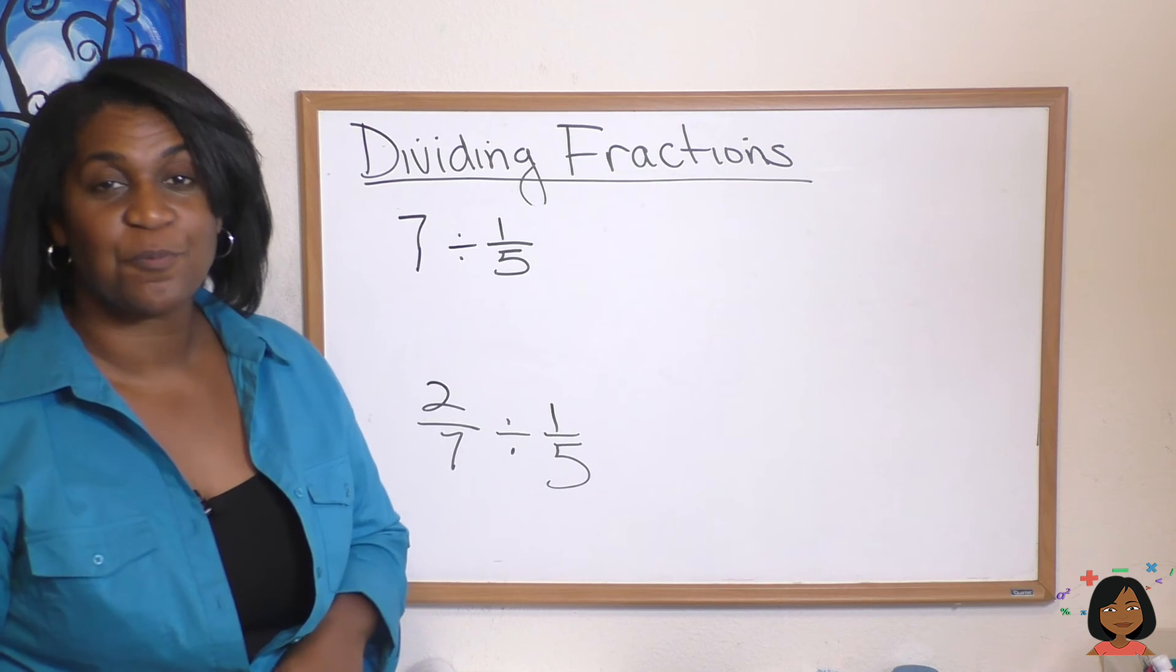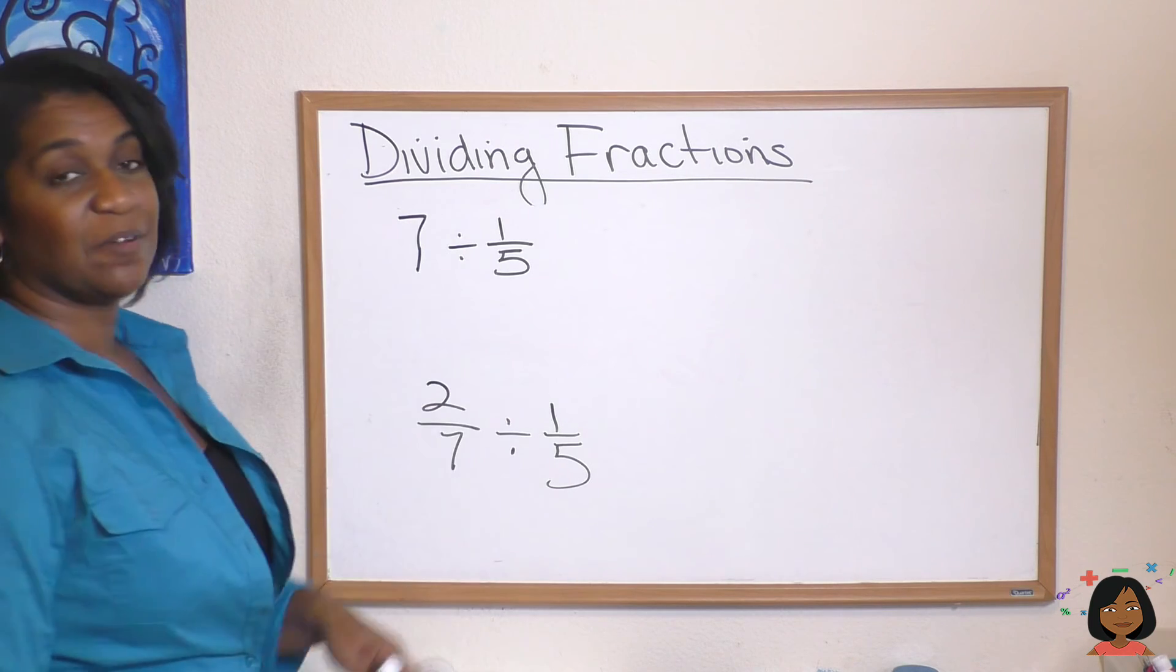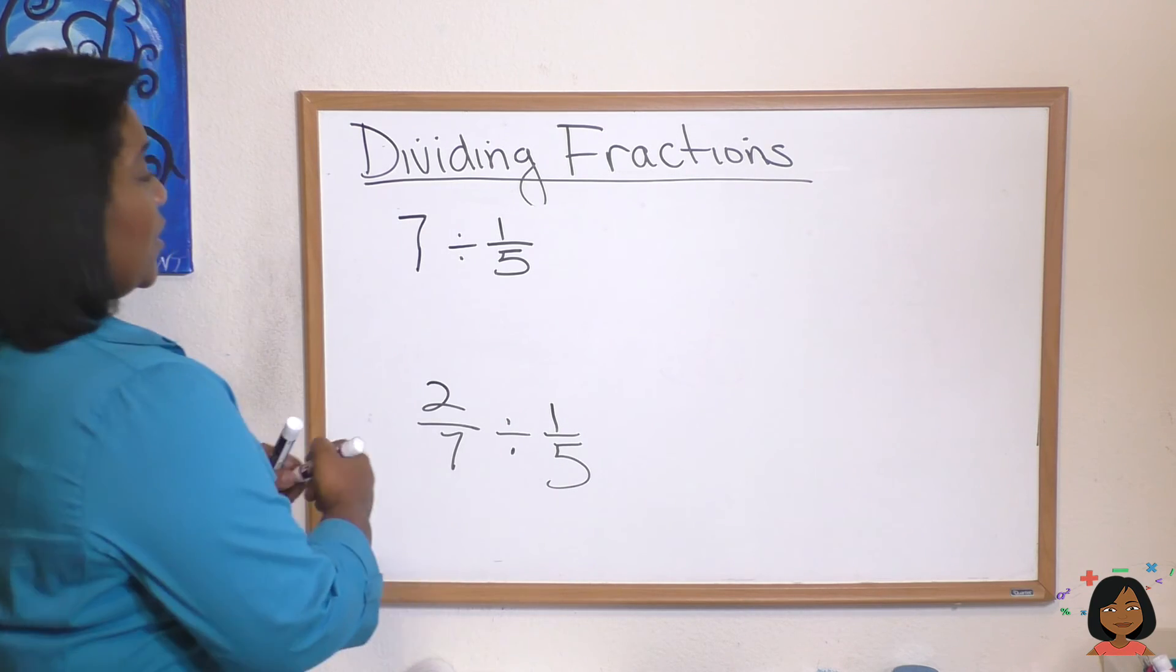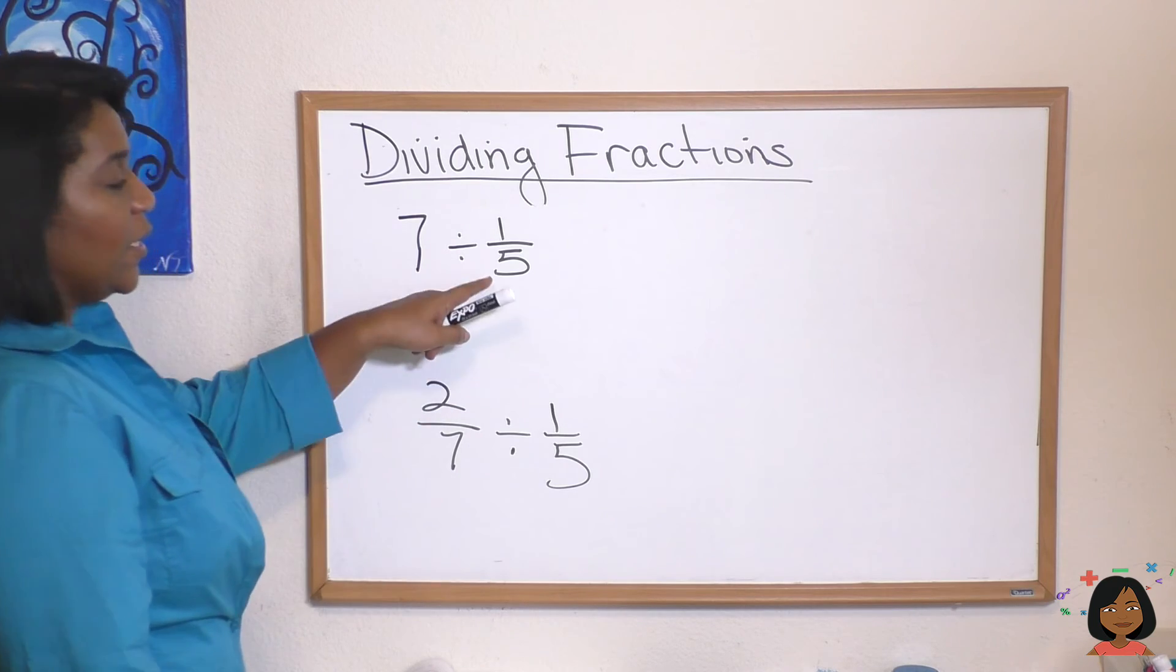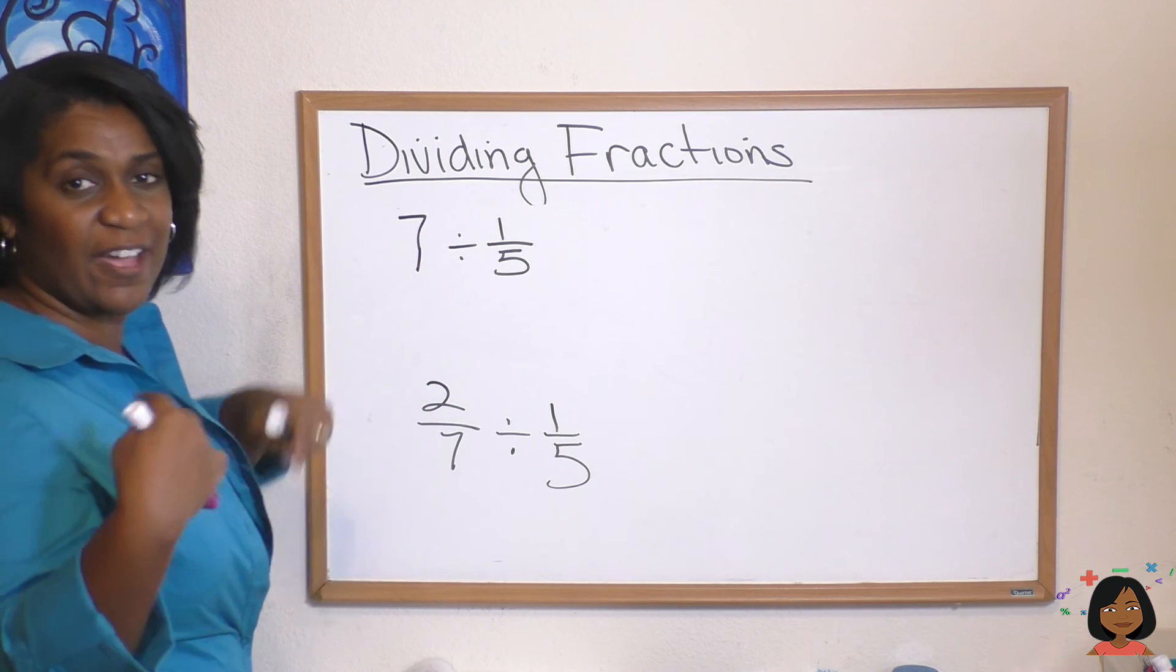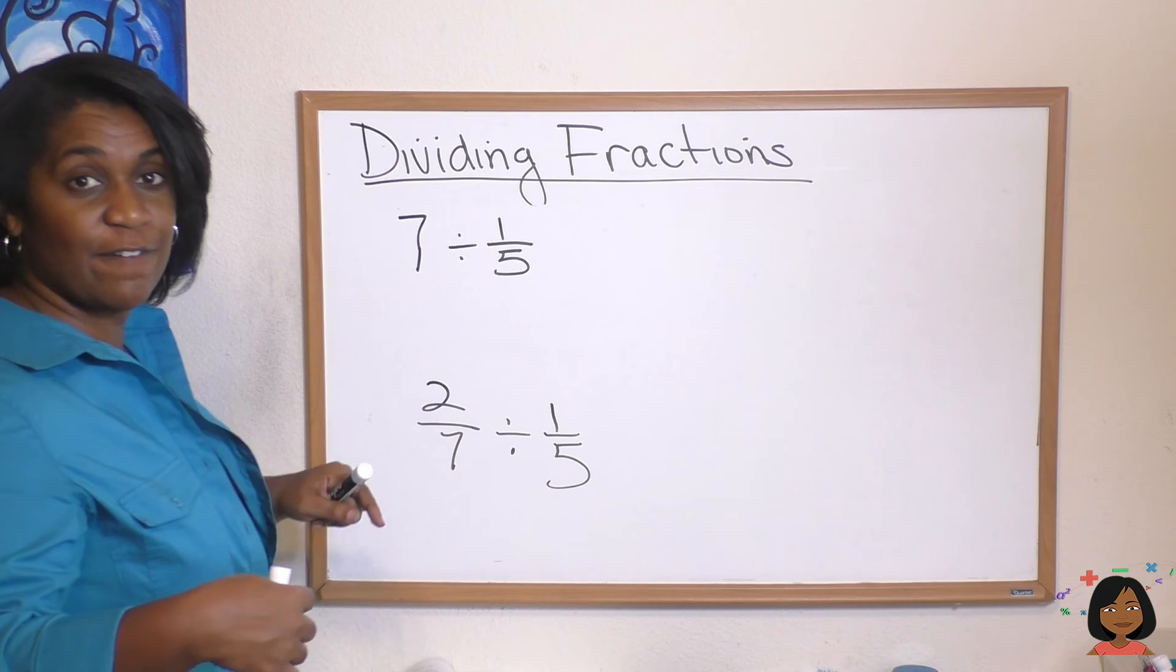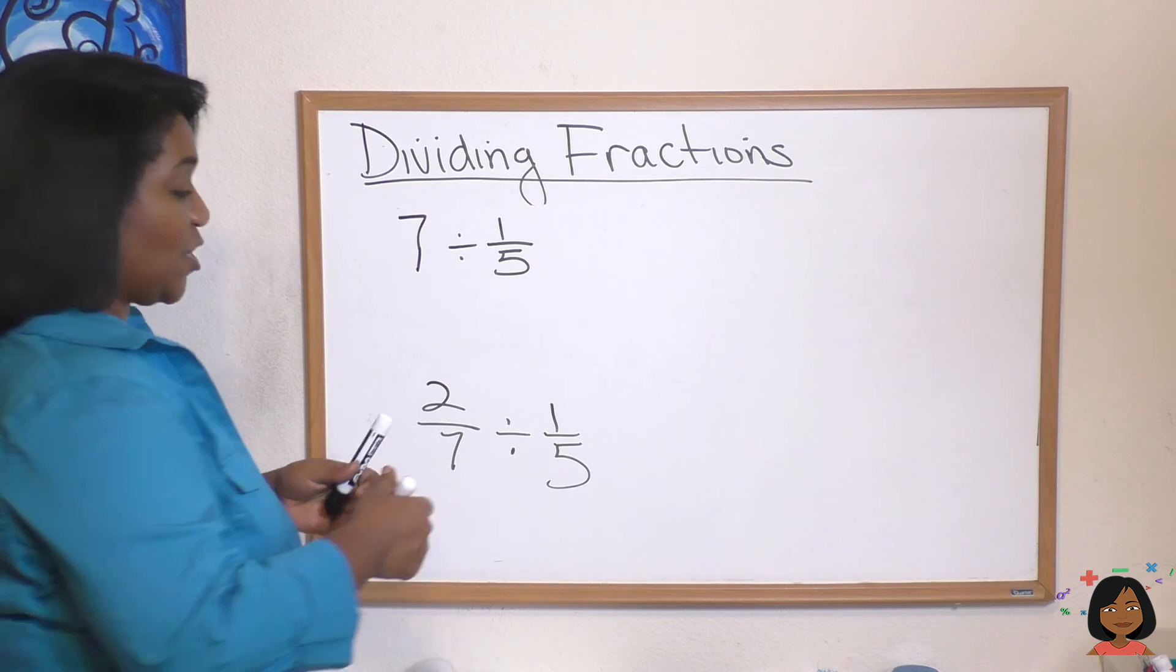Let's take a look at these two problems. Seven divided by one-fifth. So let's think it through. In one we know there's five one-fifths. In seven of them it's going to be seven times five, it's going to be 35.